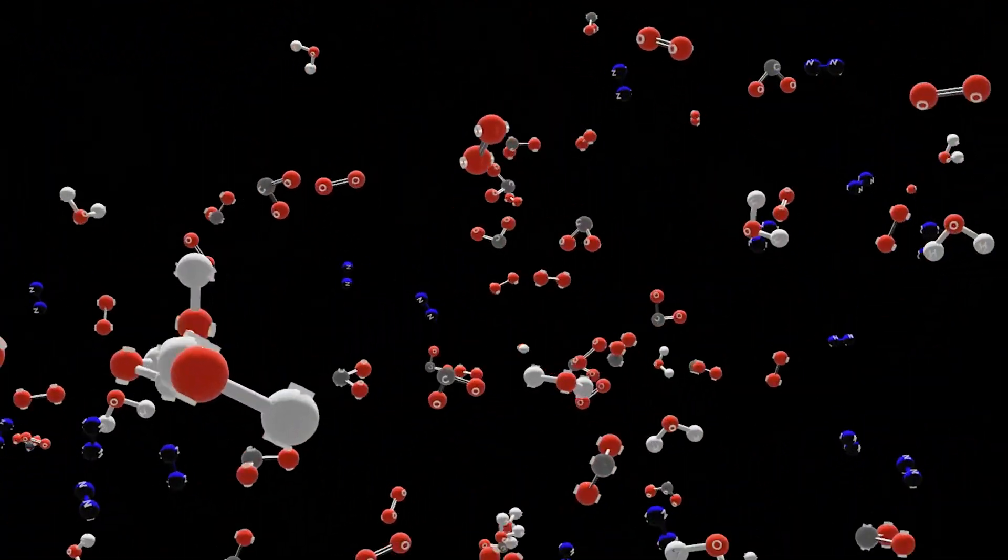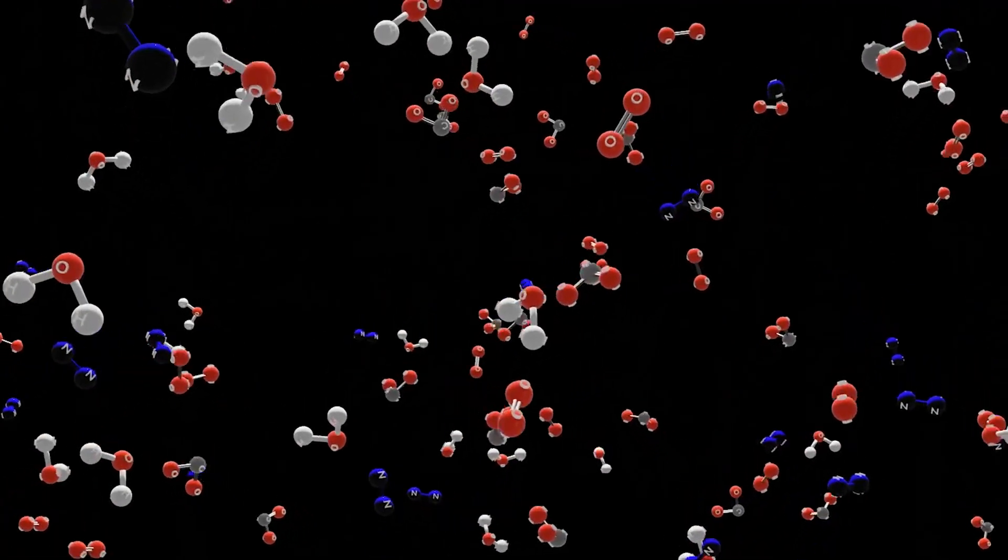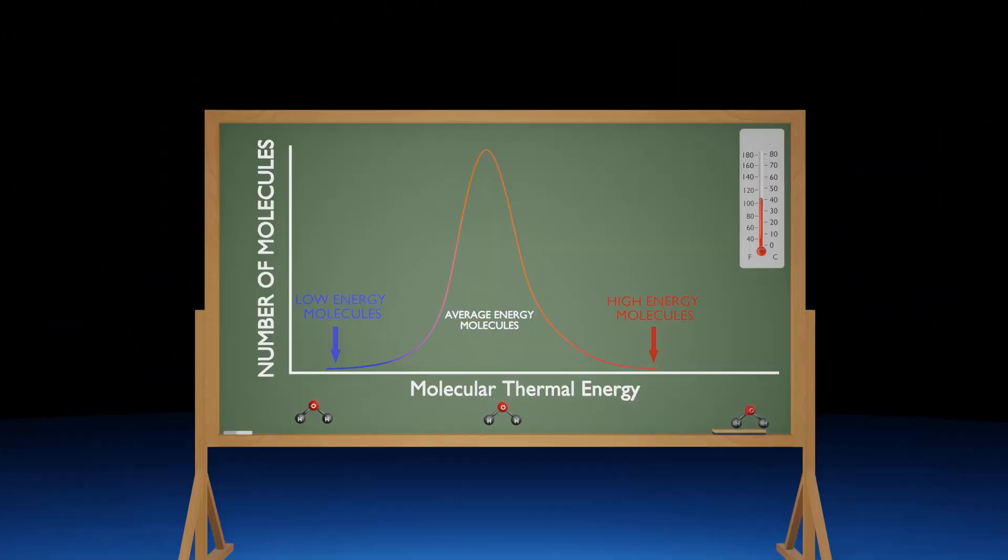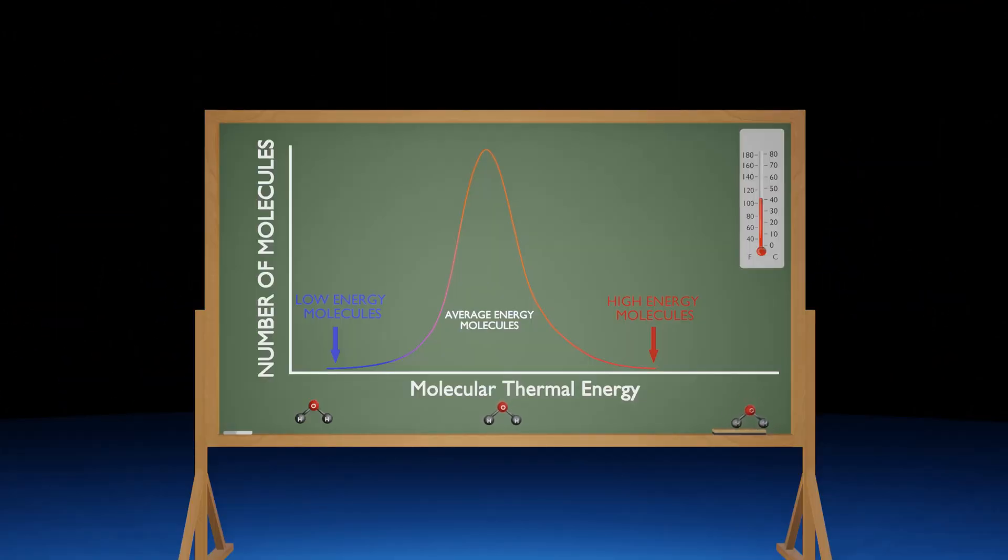Keep in mind, a measure of temperature is the average speed of the molecules, and there's always molecules moving faster and slower than the average. We can better understand this through this graph, showing us a normal distribution between the number of molecules and their energy at any given temperature. The spike in the center is where most molecules lie, but the further you get away from the average temperature, although there's less and less molecules, there's still an amount of molecules traveling at slower or faster speeds than the average.